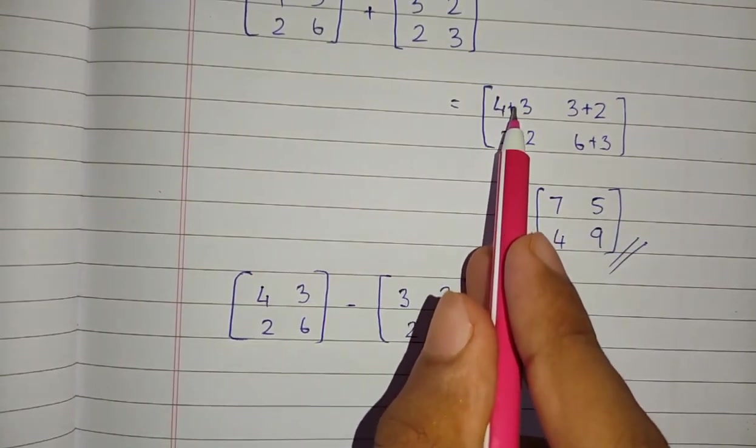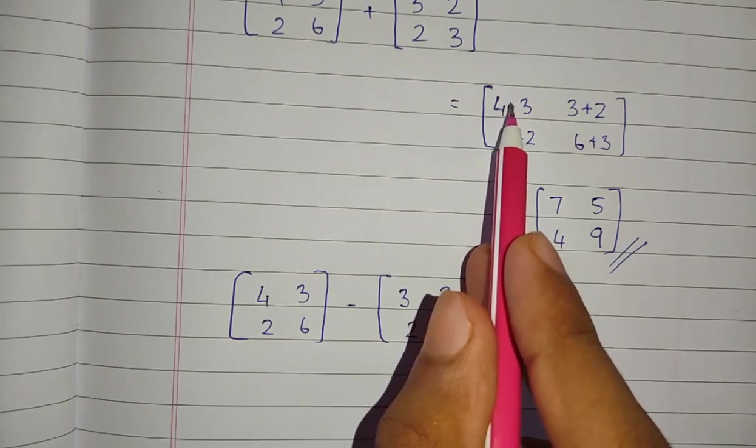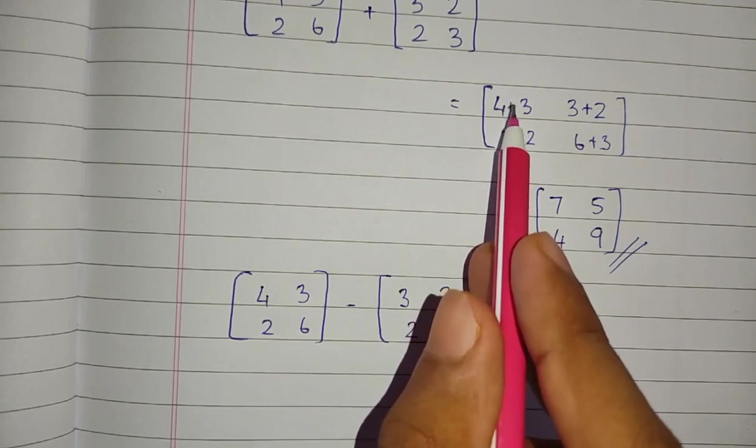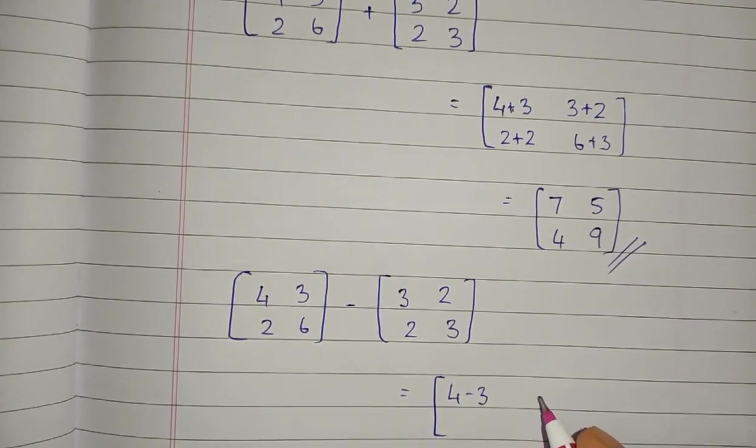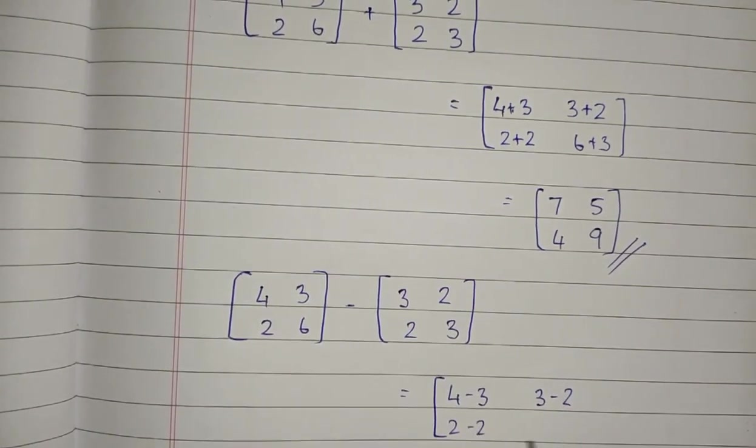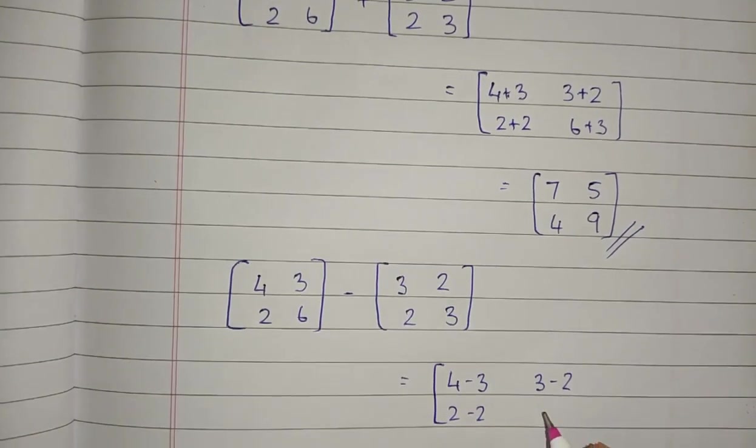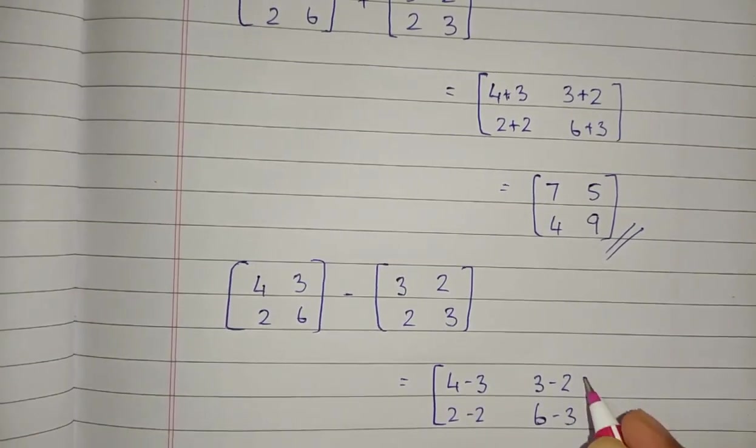Just change the symbol to minus. Here we gave plus, here we should give minus. So 4 minus 3, 3 minus 2, 2 minus 2, and 6 minus 3.